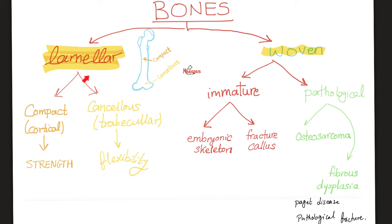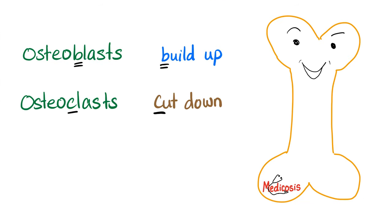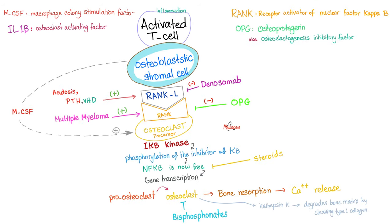Osteoblasts build up bone; osteoclasts cut down bone. Bone cells are osteocytes. To activate the osteoclast, you typically activate the osteoblast first. The osteoblast carries the RANK ligand (the key), and the RANK receptor (the lock) sits on the osteoclast. So the osteoblast activates the osteoclast.